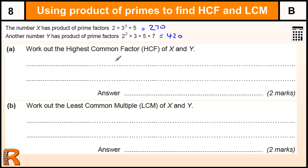For the highest common factor, what we need to do is find the biggest number that goes into both of these. What we need to do is take the lowest power of each of the prime numbers — so that's 2 to the power of 1, 3 to the power of 1, and 5 to the power of 1 in both.